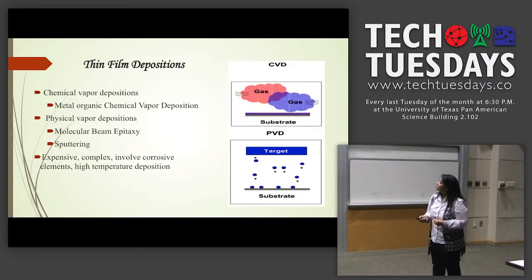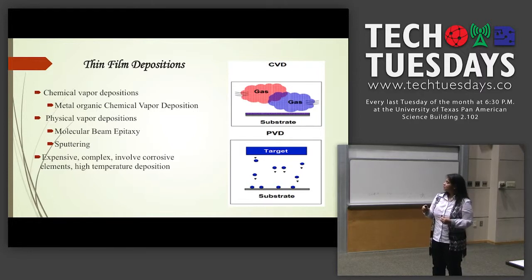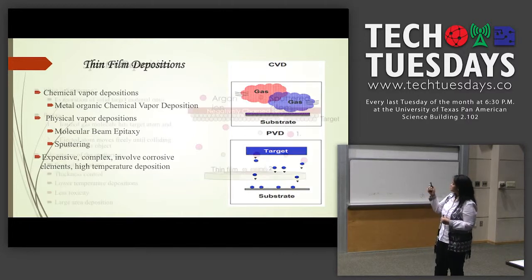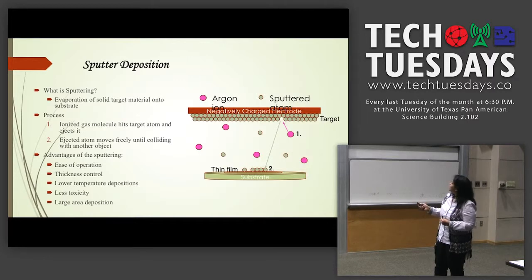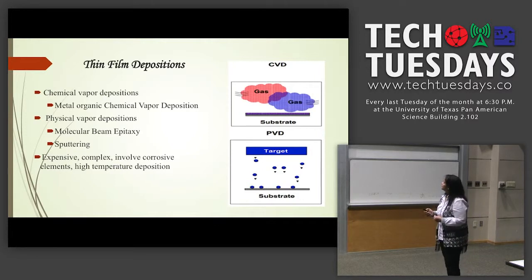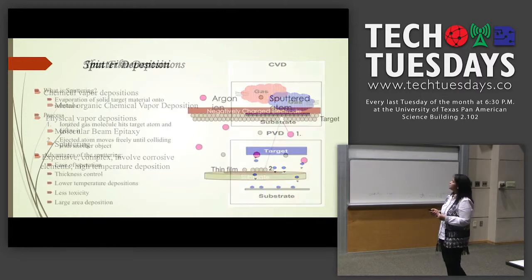We can perform deposition by two methods: chemical vapor deposition and physical vapor deposition. Chemical vapor deposition, as the name suggests, involves chemical reactions. Physical vapor deposition extracts atoms from a target and deposits them onto the substrate material. Here we have the PVD system — the physical vapor deposition system.